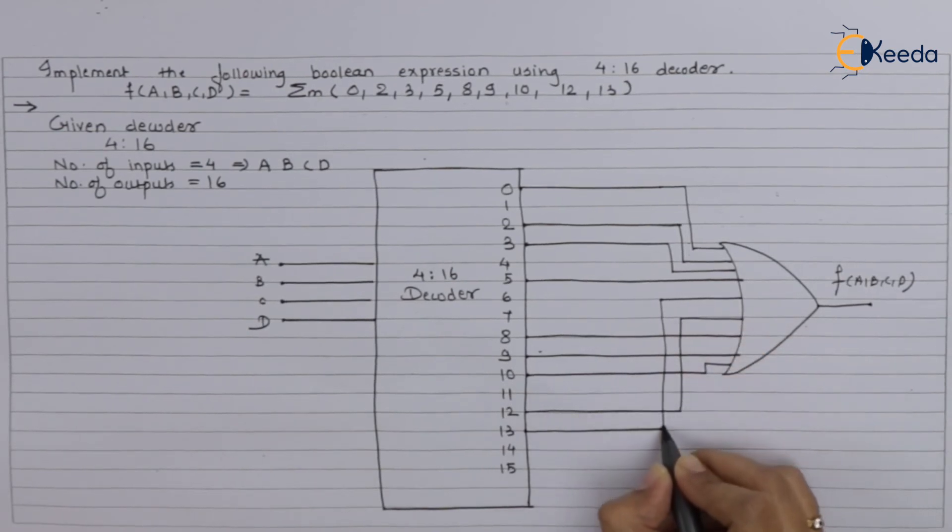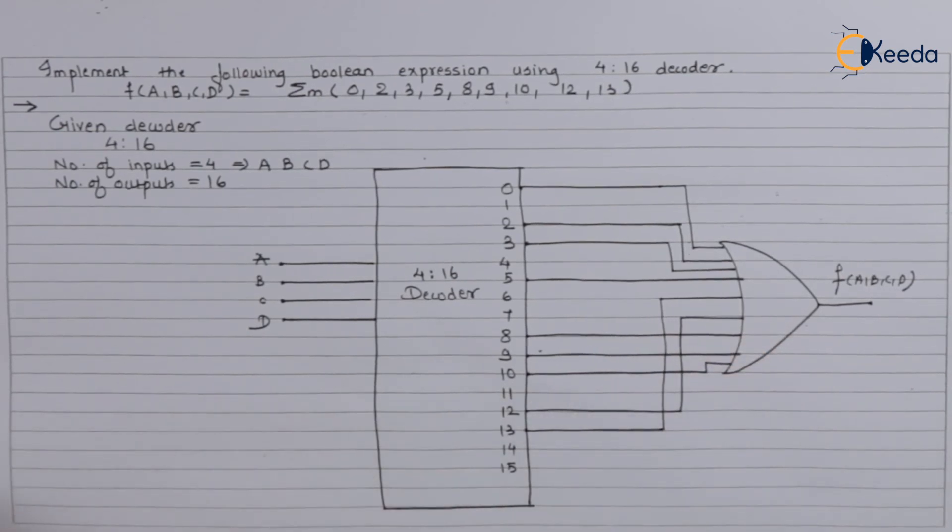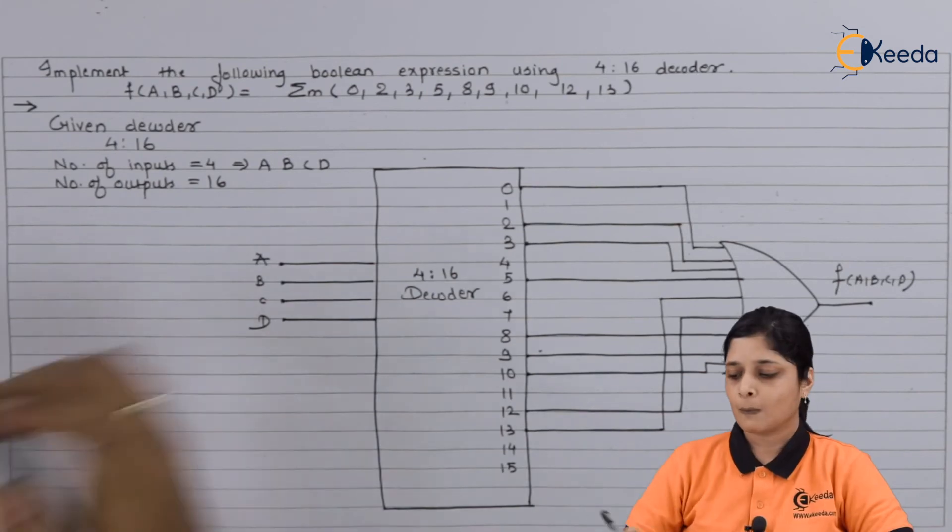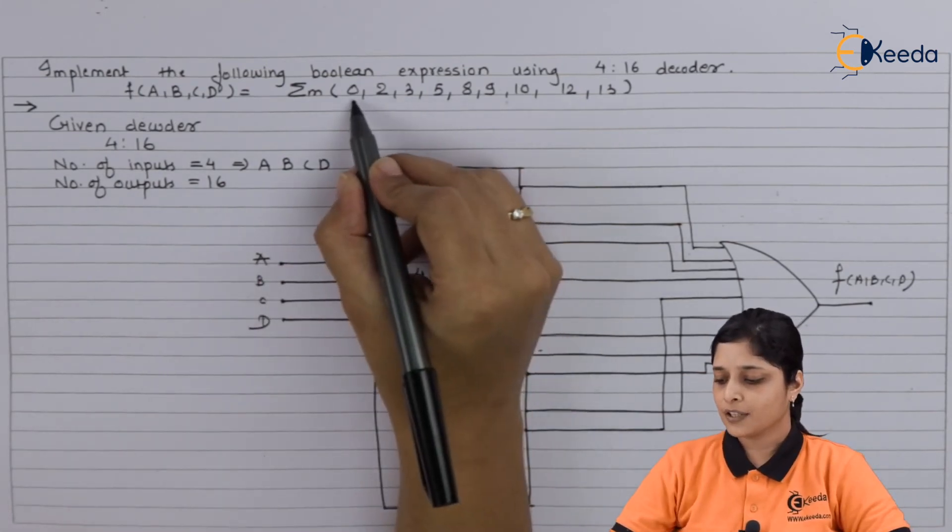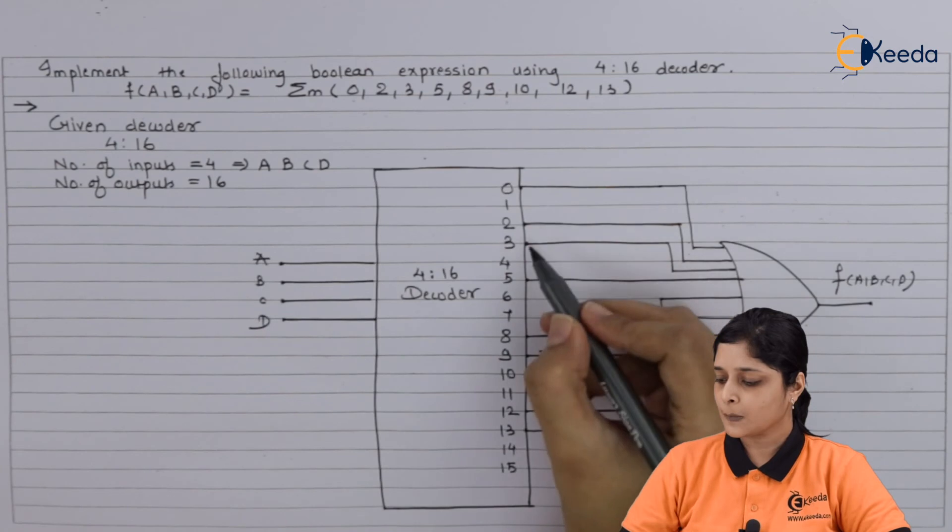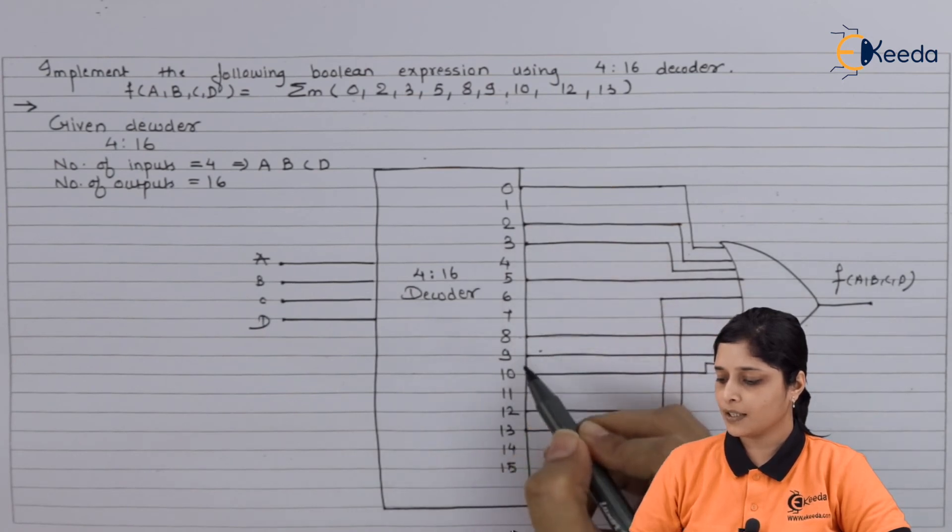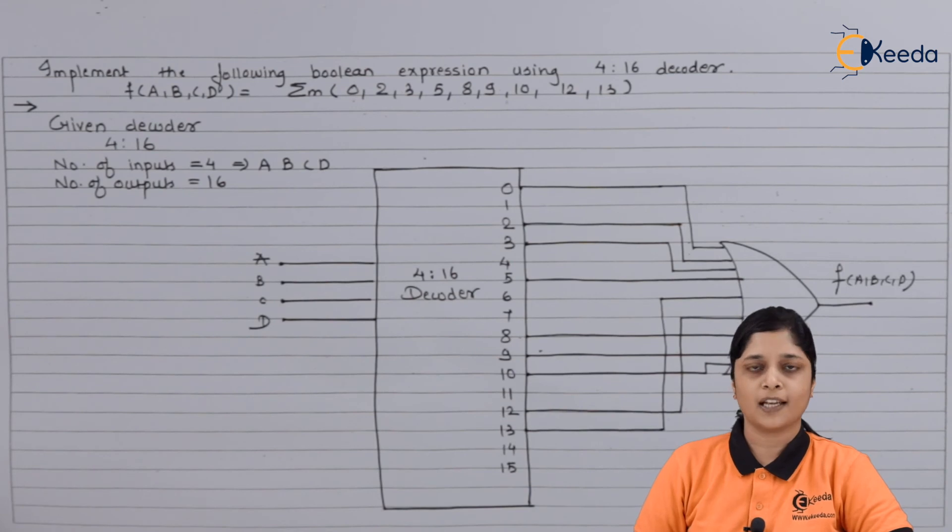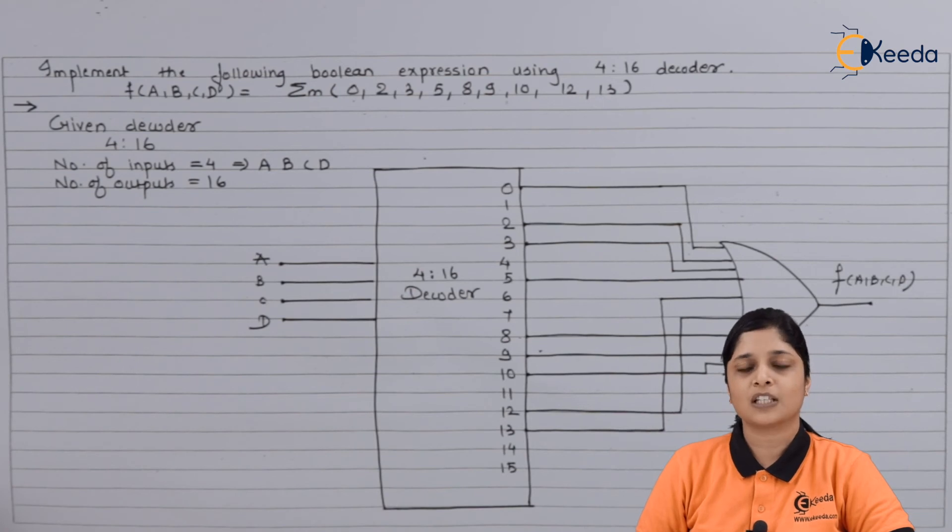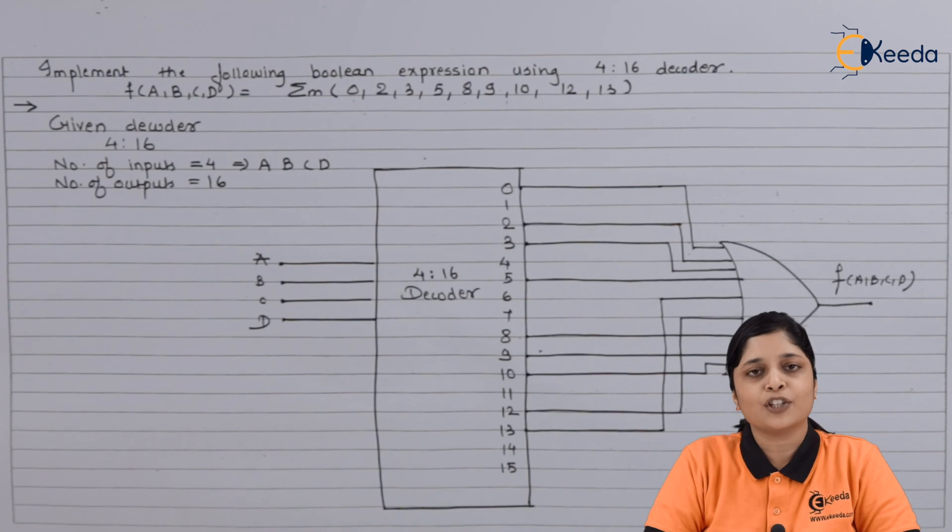So easily you can make the connections for implementation of the decoder. So we have connected 0, 2, 3, 5, 8, 9, 10, and 12, 13 to the output function f. In this way you have to design the 4 to 16 decoder using the given expressions. This is all about the decoder numerical. Thank you for watching this video. Stay tuned with Veeda and subscribe to Veeda.